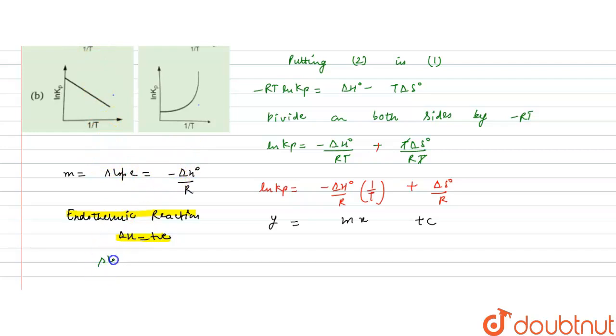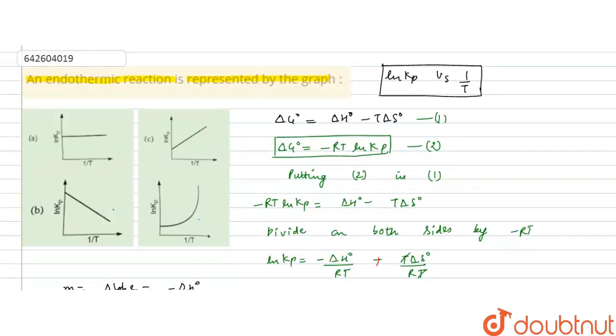So if delta H is always positive, this slope will be overall negative. So now we will see in which graph the slope is negative. In the first, slope is constant or zero, so it will not be correct. This is slope positive, so this is also not correct. This is slope negative, so this is the correct answer. This is not even a straight line, so this is also incorrect.